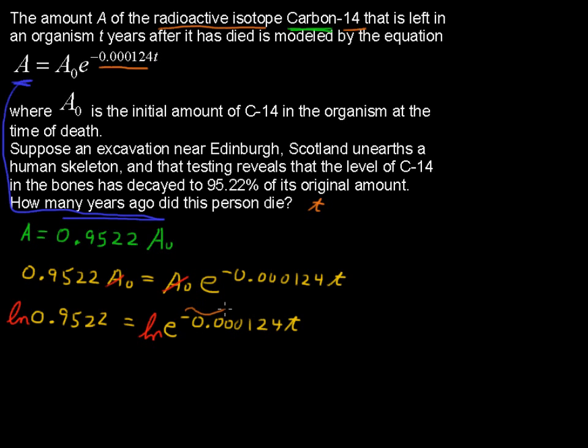And because of the properties of logarithms, we can say that this exponent, if you take the logarithm of something raised to an exponent, you can take that exponent and move it out front. So rewriting, we have the natural log of 0.9522 equals negative 0.000124 times T times the natural log of E.